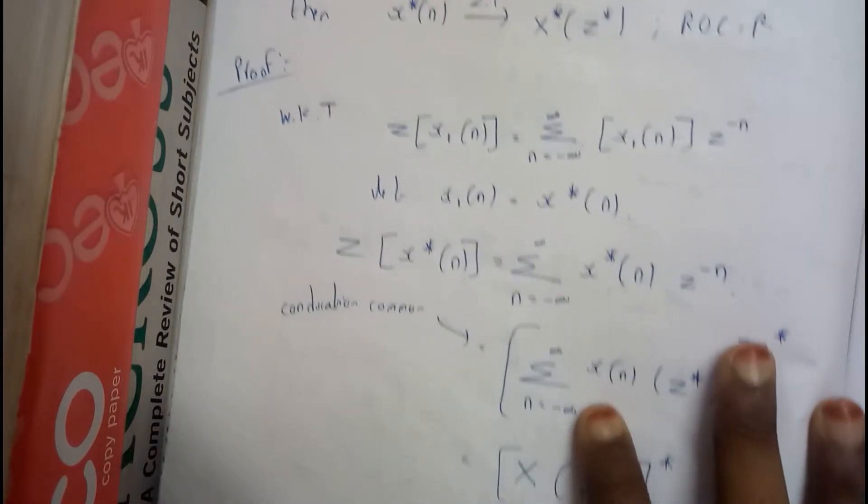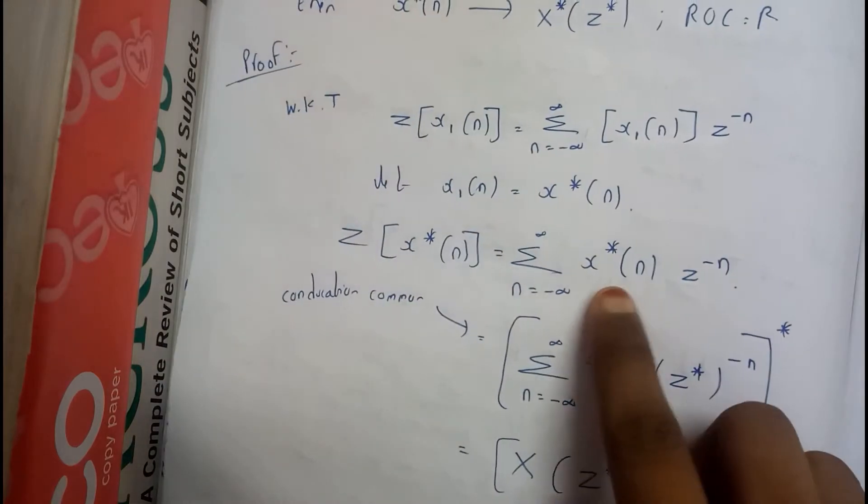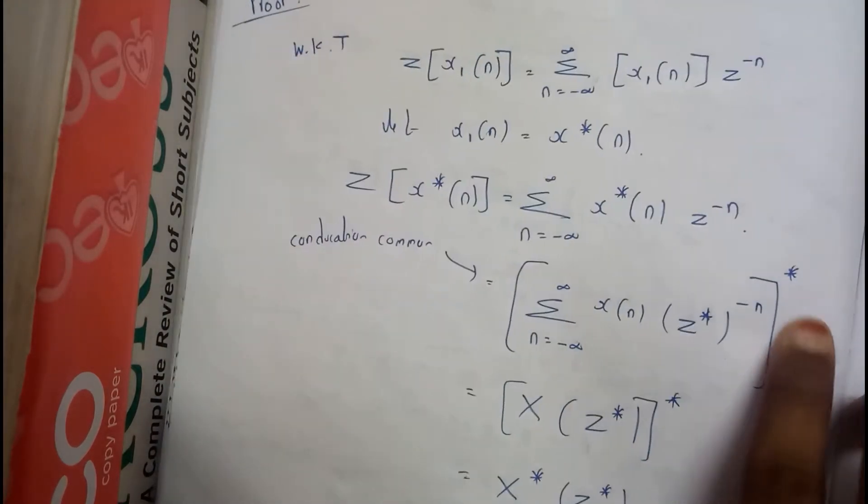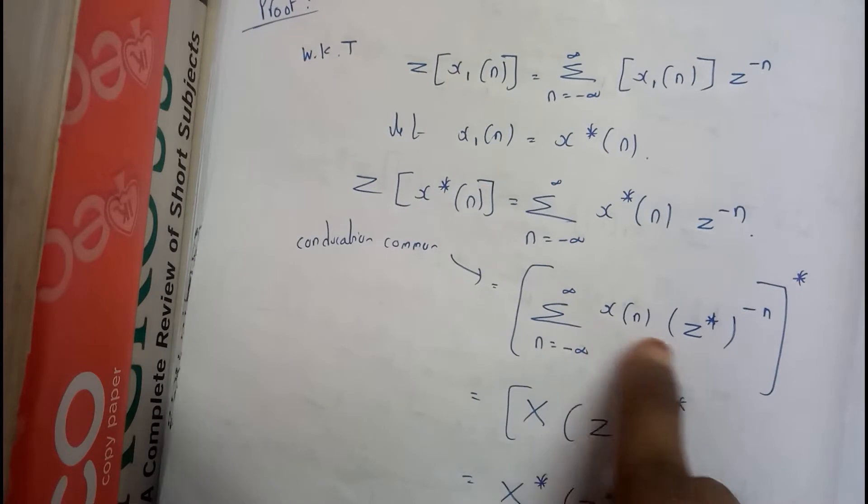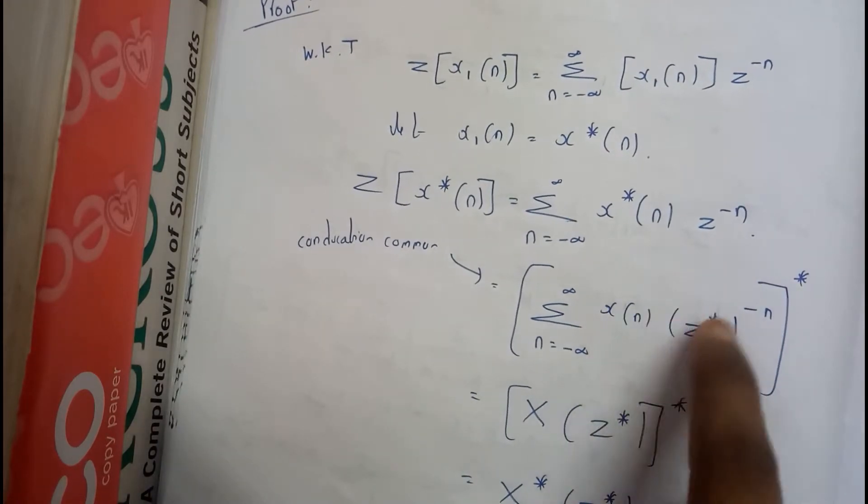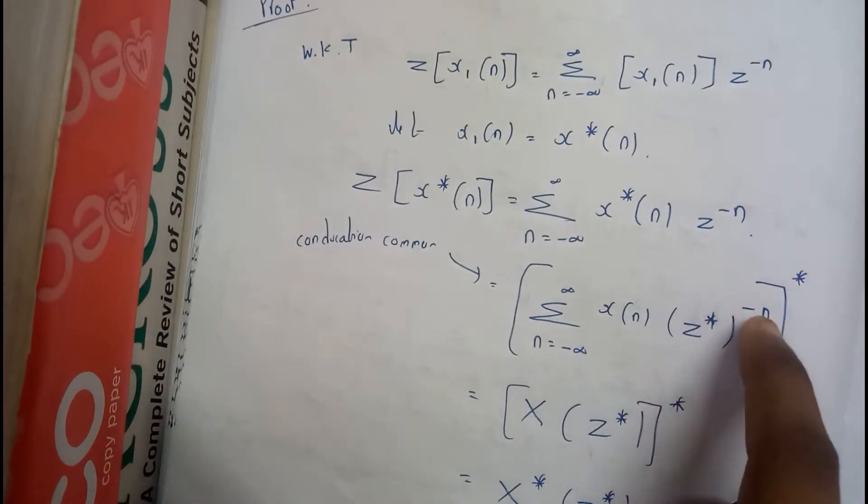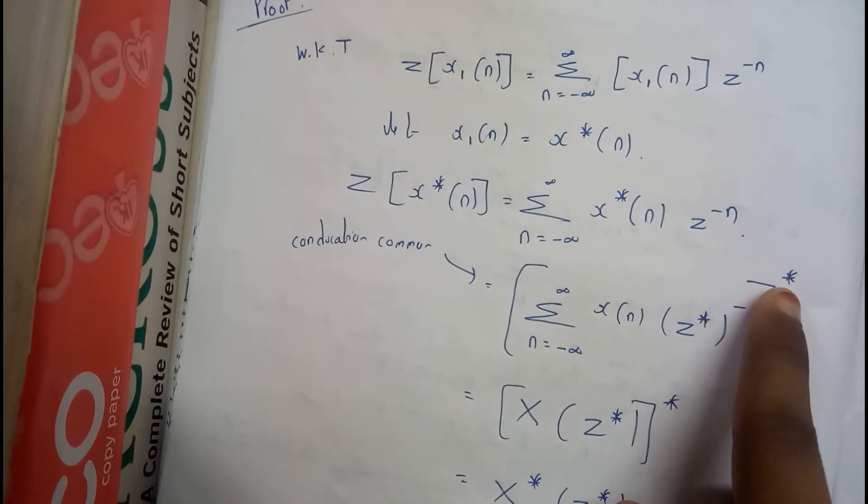So this conjugate I will be just taking it outside guys. So I will be pushing that completely outside. So sigma n equals to minus infinity x of n, z to the power of z conjugate, conjugate whole to the power of minus n into star, into conjugate.